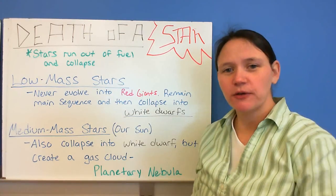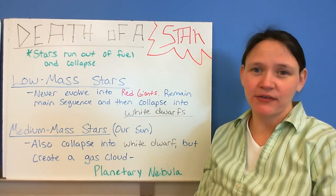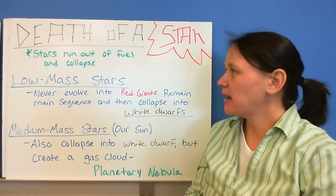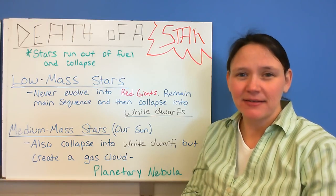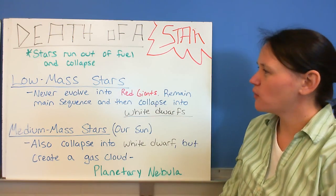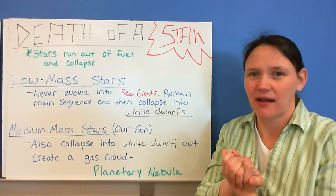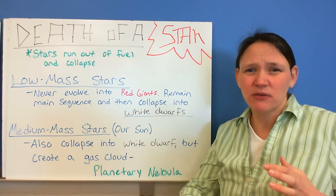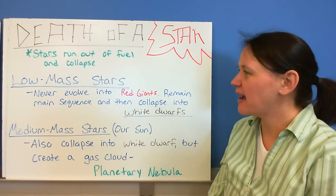After the star starts to expand, and it's in that giant stage, it really is using up all of its fuel, and basically, it dies. It's where you end up with the death of the star. It runs out of fuel, and ends up collapsing on itself. And depending on what it started out as, or how big it was, will determine what happens during its death.